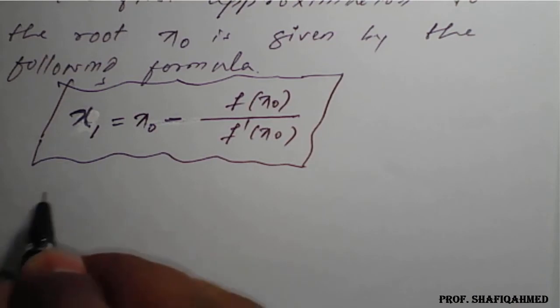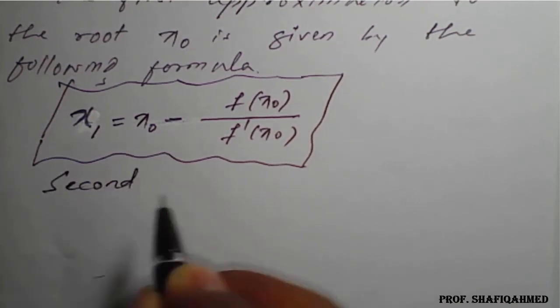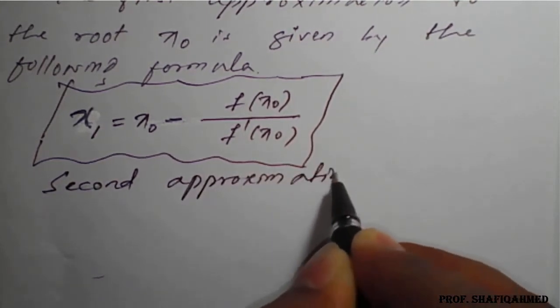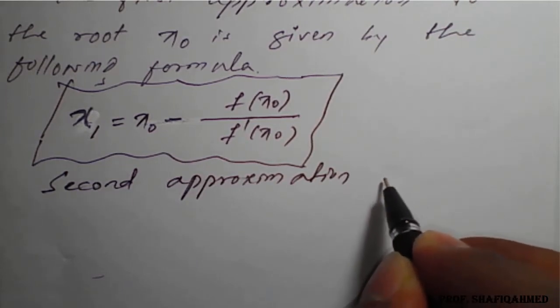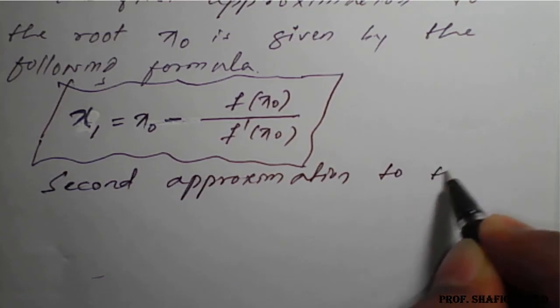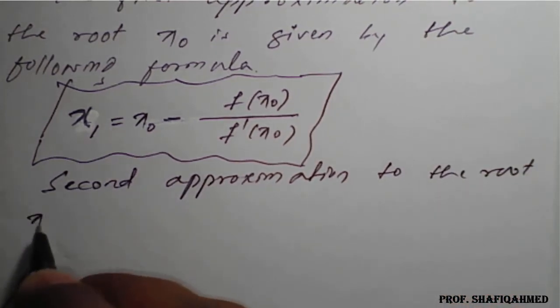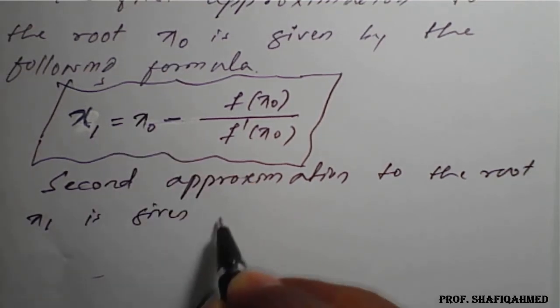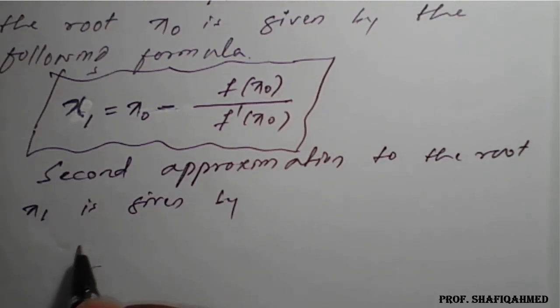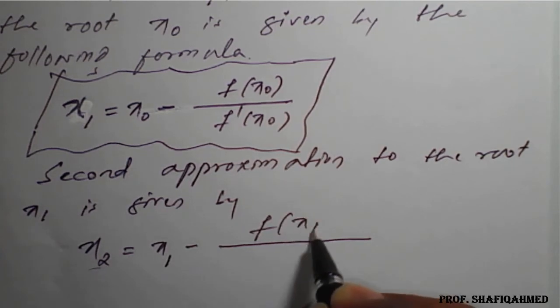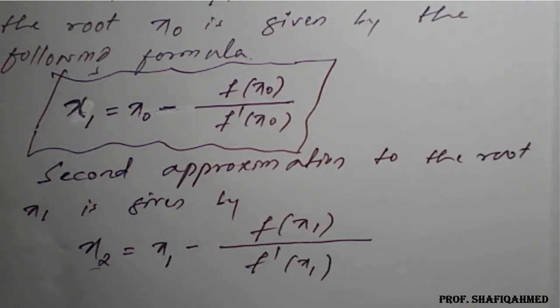Similarly, the second approximation to the root x₁ is given by: x₂ = x₁ - f(x₁)/f'(x₁).